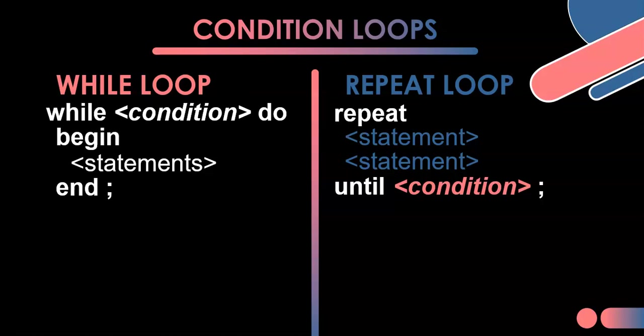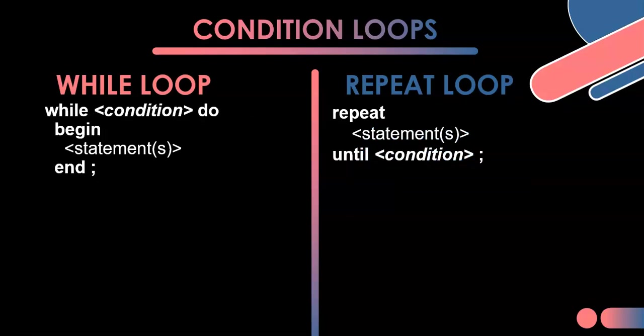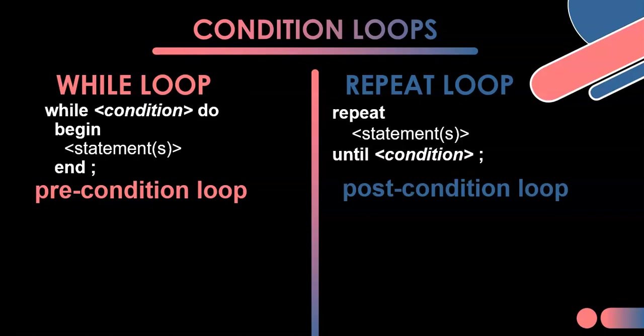What are the differences between the two loops? Honestly, 99% of the time you can use either one. There's a special case where you'd use one over the other. The first key difference is that a while loop is a pre-condition loop — the condition is checked before the loop starts. A repeat loop is a post-condition loop — the condition is checked after the loop, right at the end.